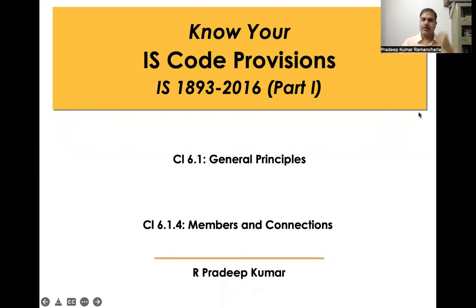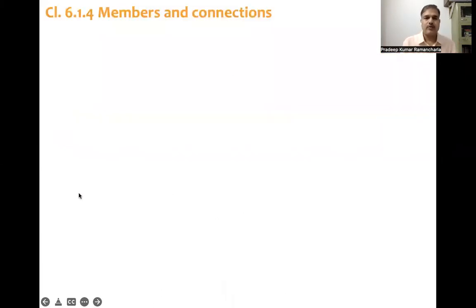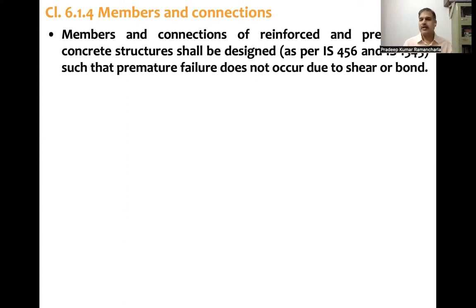Members and connections — that is clause number 6.1.4. The code says that members and connections of reinforced concrete (RC) and pre-stressed concrete structures shall be designed such that premature failure does not occur due to shear and bond. Shear and bond are brittle failure modes — there will be no warning if a member, joint, or connection fails in shear or bond.